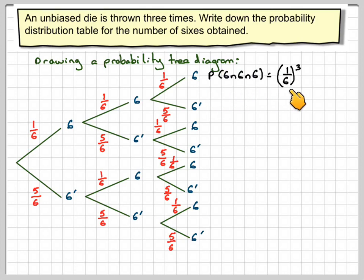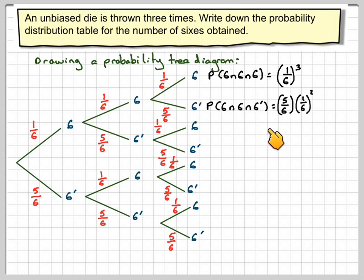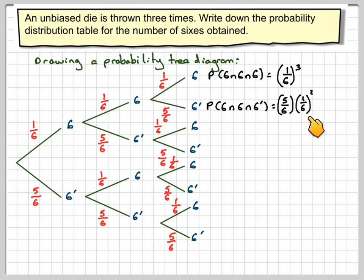We can calculate the probabilities by multiplying the events because they are independent events. So the probability of all sixes will be one-sixth cubed — I've left it like that on purpose. A six, a six, and not a six is five-sixths times one-sixth squared. Again I've left it like that on purpose.